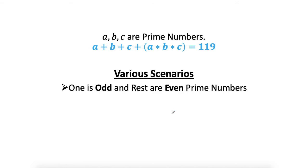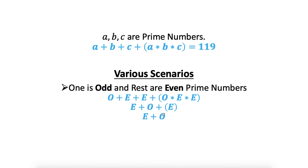Now let's see the last scenario: one odd and two evens. That is odd plus even plus even plus the product of odd times even times even. The product includes even numbers so it's even. The two evens in the sum are even. Adding even plus even gives even, and then adding the one odd gives an odd result. Yes — this is possible!